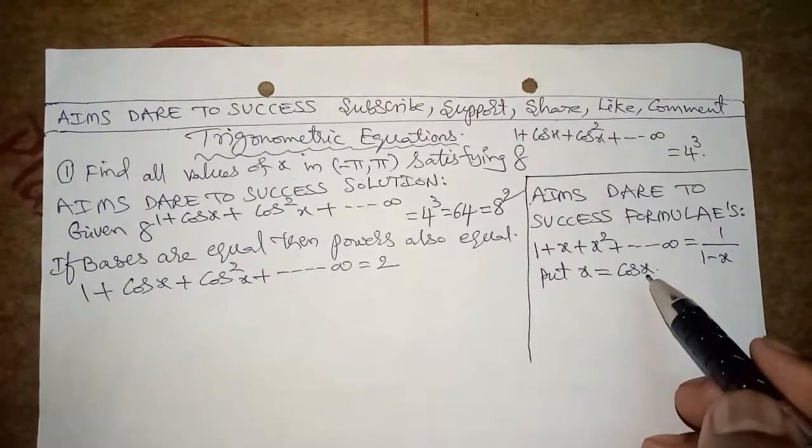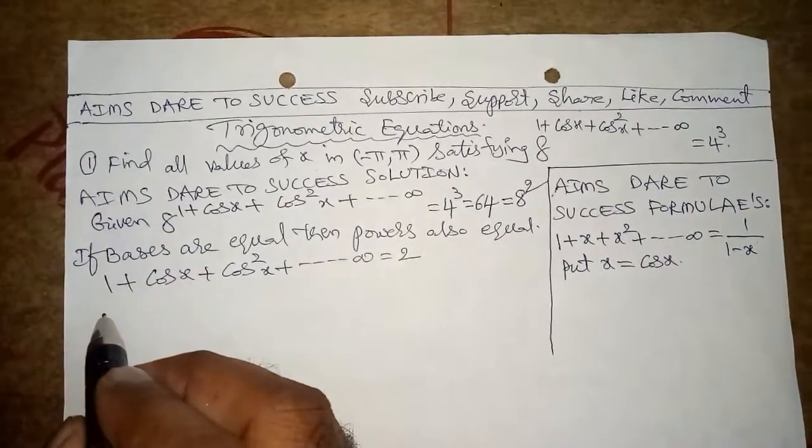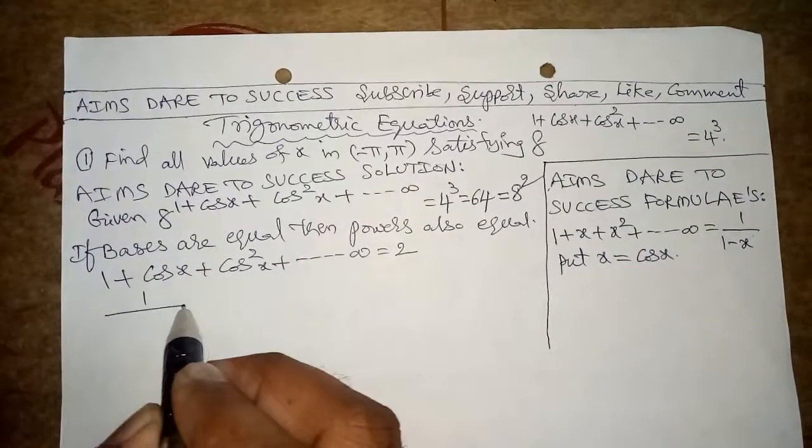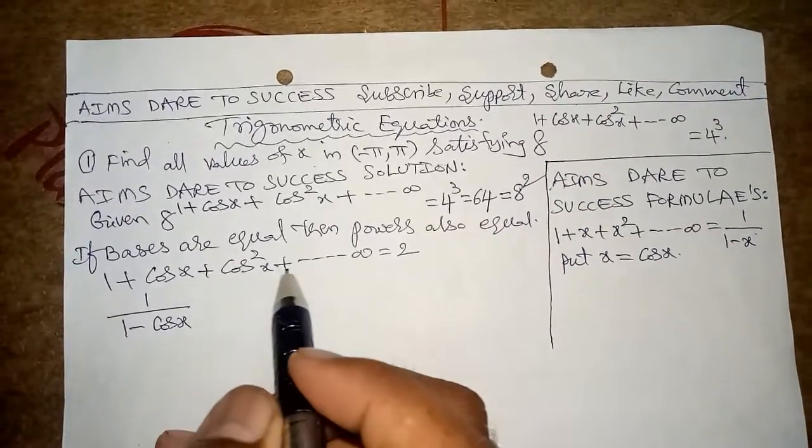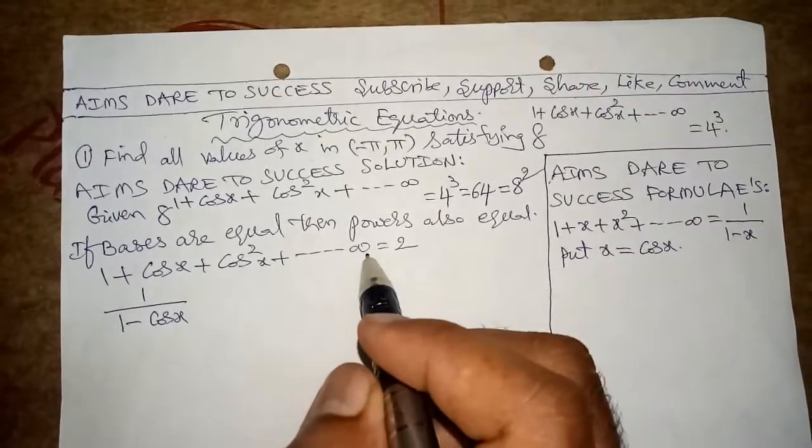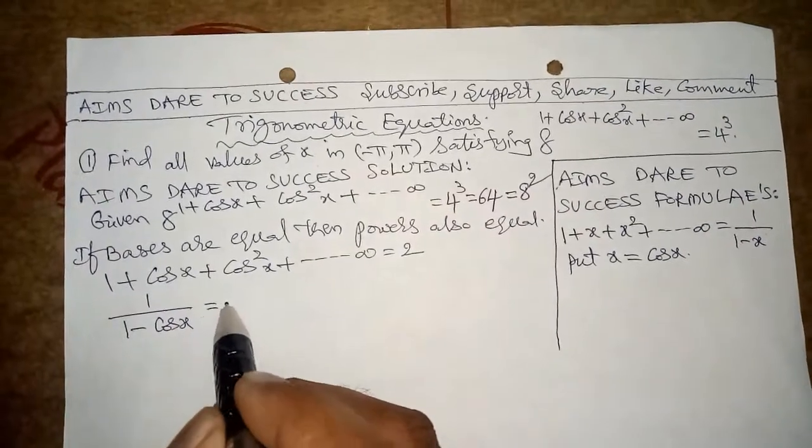Here substitute x is cos x. We get 1/(1 − cos x). That is, 1 + cos x + cos²x + ... = 2. Take cross multiplication.